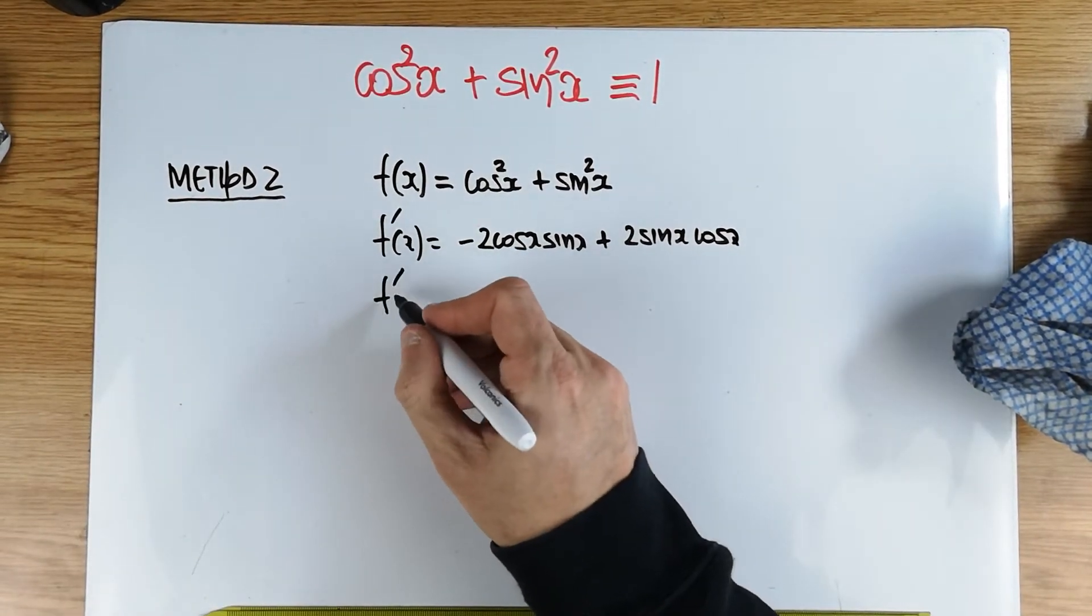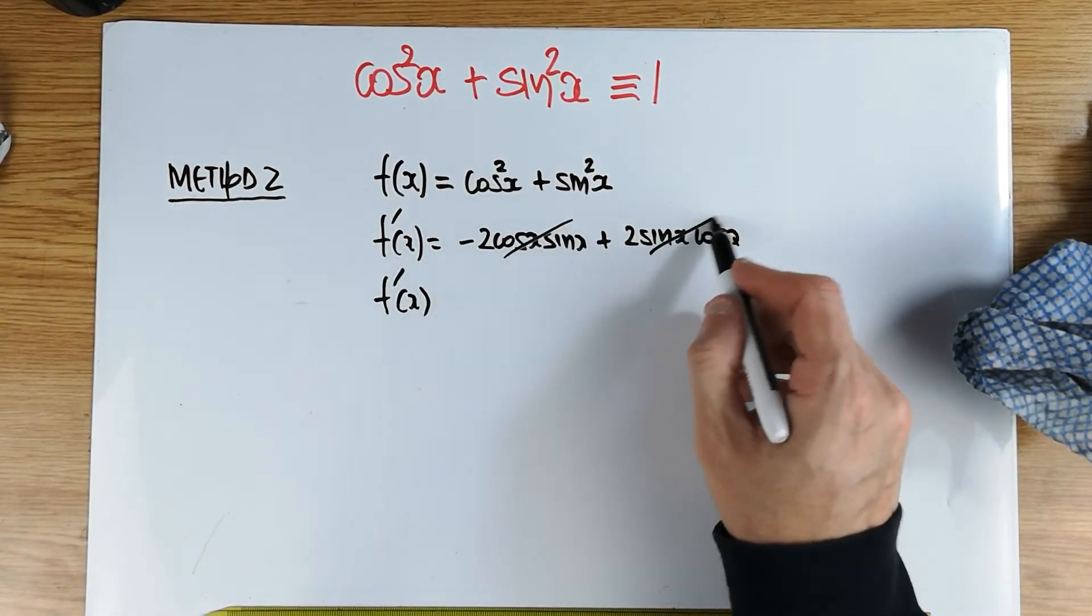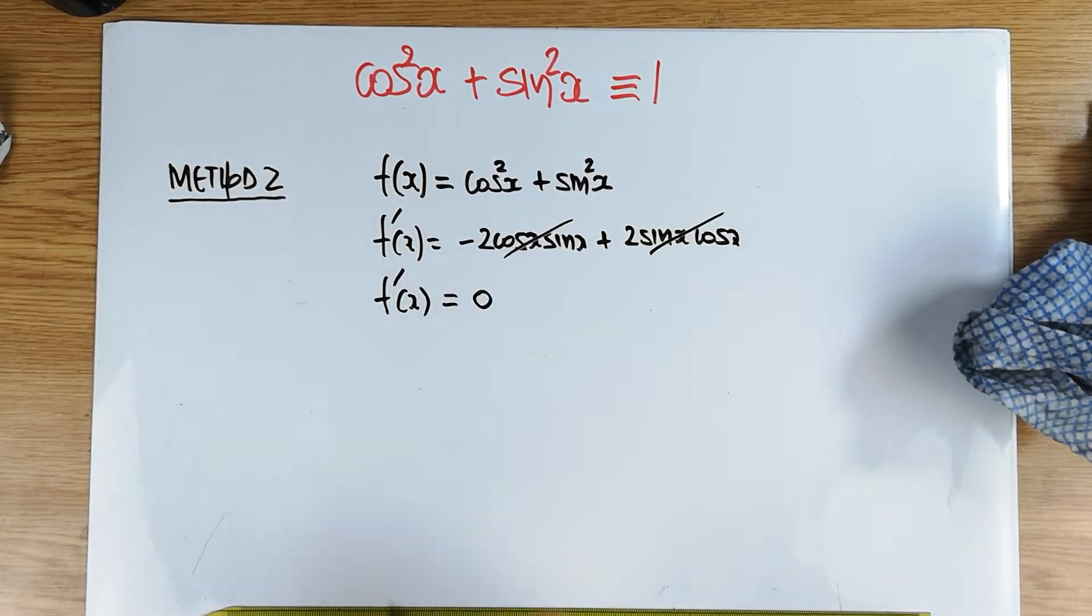And if you look carefully at what just happened in there, these two things cancel each other. So in fact, f dash of x is equal to zero.